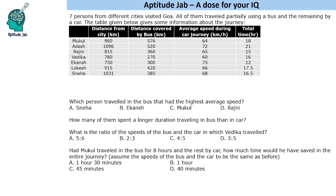The problem states that there are 7 friends who visited Goa and they travelled partially using a bus and the remaining by car. In the table we are given the distance from the city, the distance covered by bus, the average speed of the car journey, and the total time taken. Basically we are given partial information, and some information which is not given would be asked in the questions.